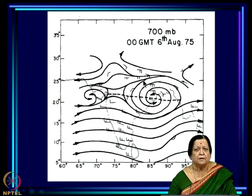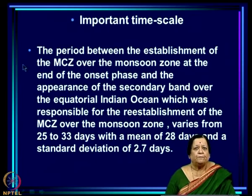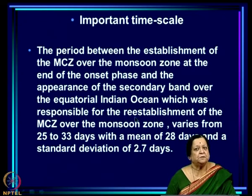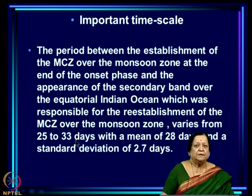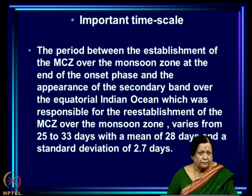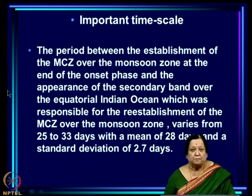A time scale is emerging here: the period between the establishment of the MCZ over the monsoon zone at the end of the onset phase and the appearance of the secondary band responsible for re-establishment varies from 25 to 33 days, with a mean of 28 days and standard deviation of 2.7 days. This time scale of about a month is very interesting and must be pursued further.